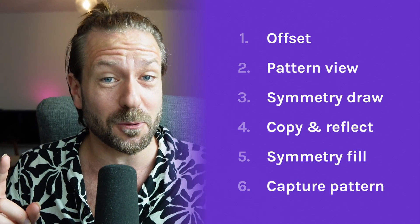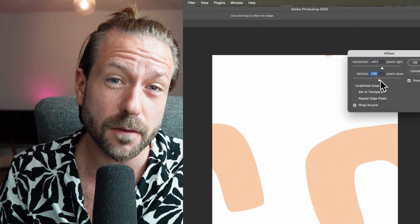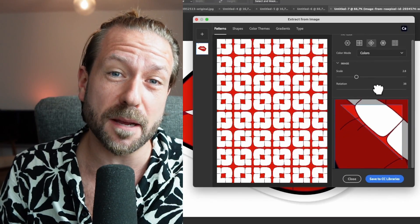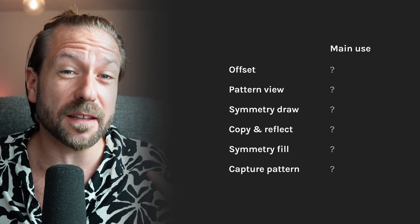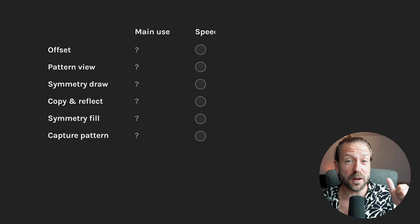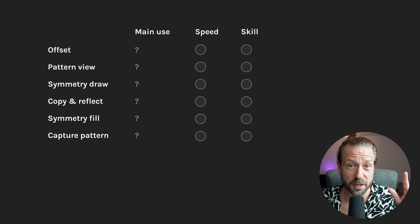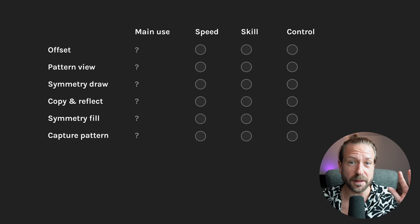There are many ways to design patterns in Photoshop and I bet you don't know all six I'm going to show you. We will go from old school tricks like offset to clever automations like Adobe Capture. For each one I will show you what it can do, what it's great at and where it falls short. We will look at how fast it is, how much skill you need, how much control you get and how many patterning options it gives you. By the end you will know exactly which method to pick and when.